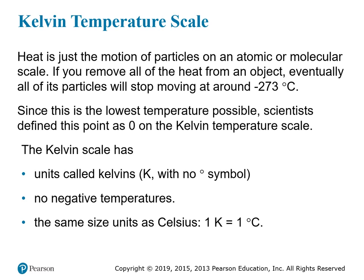The Kelvin scale has units called Kelvins, and unlike Fahrenheit and Celsius, they are not written with the degree symbol — they are not considered degree units, they are Kelvin units. Because zero is defined as the absolute zero, the point at which all molecular motion stops, you can't have less than no motion, so there are no negative temperatures on the Kelvin scale. One Kelvin equals one degree Celsius — the units are the same size, just with different zero points.